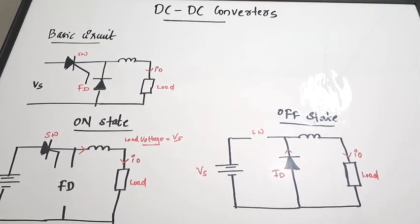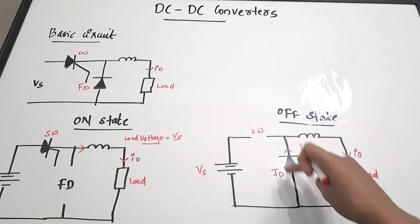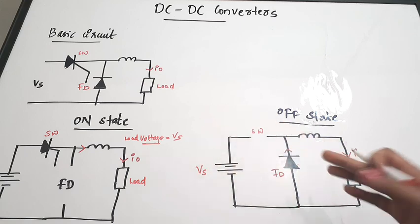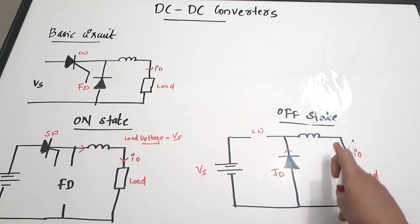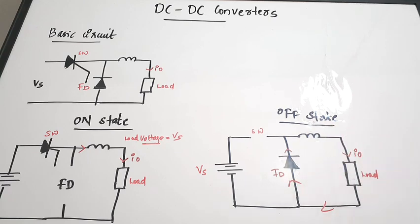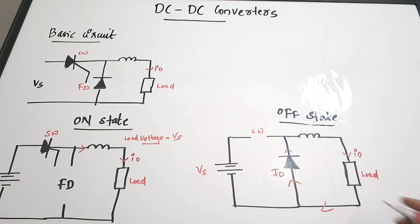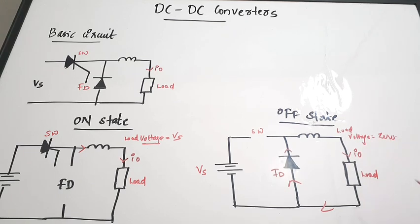During the off state the switch is open, so there is no connection between the source voltage and the load. The load current flows through the freewheeling diode, which forms a short circuit path for the load. The load terminal is short-circuited by the freewheeling diode, and as a result the load voltage equals zero volts.